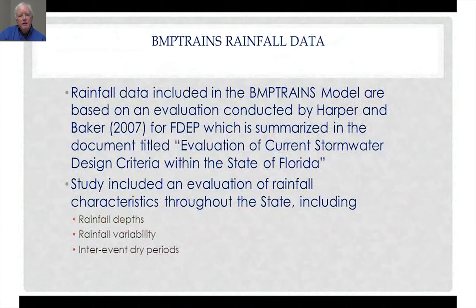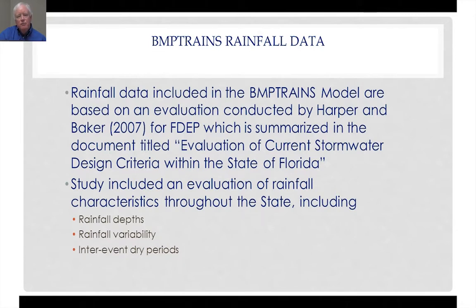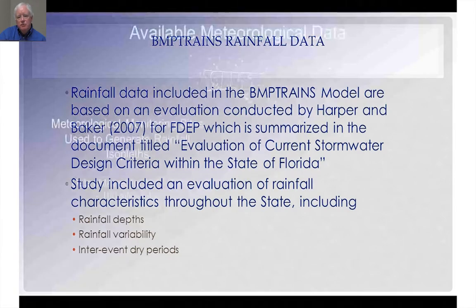The BMP Trains model uses rainfall data which were developed by Harper and Baker in 2007 as a project for FDEP, summarized in the document titled Evaluation of Current Stormwater Design Criteria within the State of Florida. This study included an evaluation of rainfall characteristics throughout Florida, including information on rainfall depths, variability in rainfall, and inter-event dry periods.